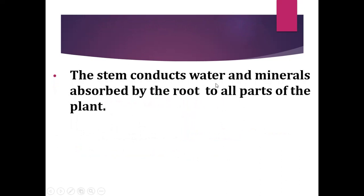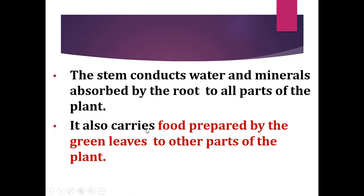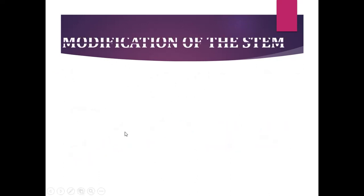The stem conducts water and minerals absorbed by the root to all parts of the plant. The water and minerals needed for the growth of plants travel from the root to the stem, and from the stem they are transferred to all parts of the plant. The stem also carries food prepared by the green leaves to other parts of the plant. The leaf is the kitchen of the plant, and the food prepared in the green leaves is transferred to other parts with the help of the stem.